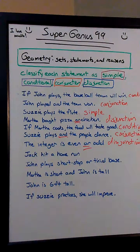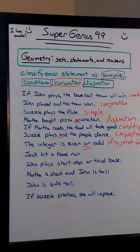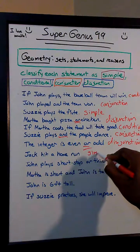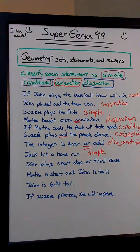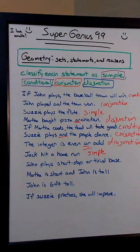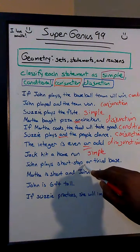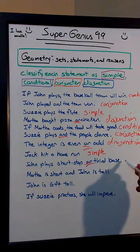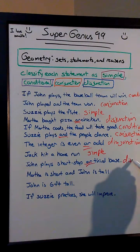'Jack hit a home run.' Simple, conditional, conjunction, or disjunction? That is, in fact, simple. Next: 'John plays shortstop or third base.' See that 'or' there? So that's usually a good sign of disjunction.